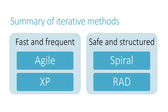So once again, you've seen this diagram before. The agile and XP methods are characterised by quick release, fast sprints and frequent upgrades. But that method isn't always appropriate, so there are other types of iterative method which are less risky and more controlled.